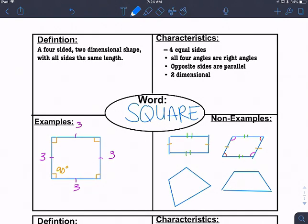So that's a Frayer model. It is important that you get all four parts of that. And if you have any questions, please let me know.